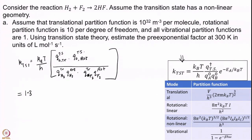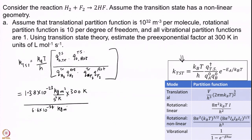k_B is 1.38×10⁻²³ kg·m²/(s²·K) times 300 K, divided by h = 6.6×10⁻³⁴ kg·m²/s. The translational partition function per molecule is given as 10³², so for the transition state it is 10³². The transition state is non-linear, so it has 3 rotational degrees of freedom, giving a rotational partition function of 10×10×10 = 10³.